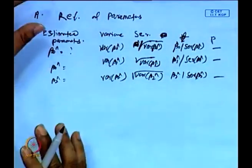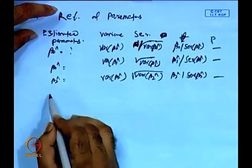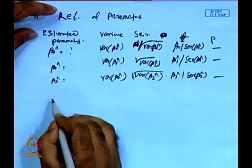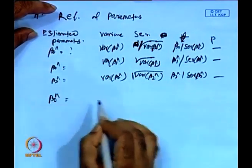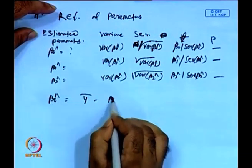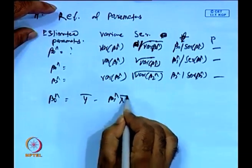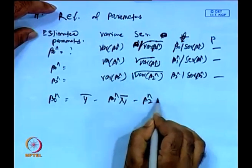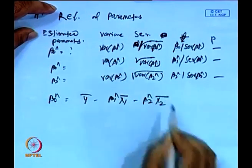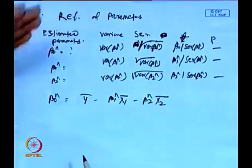Beta0-hat is equal to y-bar minus beta1-hat*x1-bar minus beta2-hat*x2-bar. That means we first get to know what is beta1-hat and what is beta2-hat. Once we have beta1-hat and beta2-hat, then we can calculate beta0-hat.